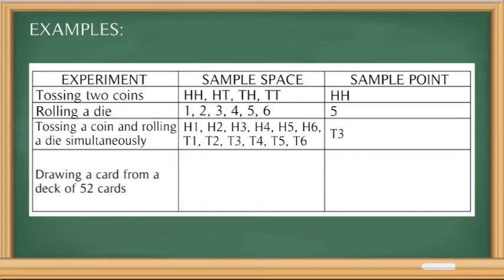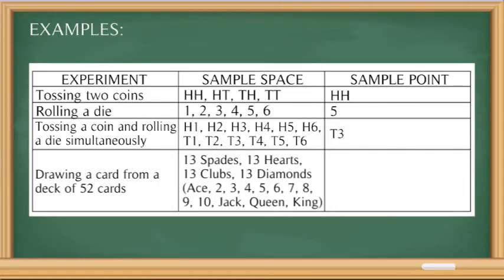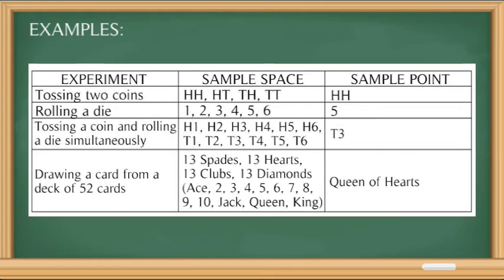Lastly, another experiment is drawing a card from a deck of 52 cards. A deck of 52 cards has 4 suits: spades, hearts, clubs, and diamonds. Each suit has 13 cards starting from the ace up to the king. So the entire possible outcomes for our sample space is 13 spades, 13 hearts, 13 clubs, and 13 diamonds from ace to king. A sample point could be, for example, the Queen of Hearts. Note that 'Queen' alone is not a sample point because there are 4 types of Queens, which are 4 different sample points in a deck of cards — so we really have to be specific.